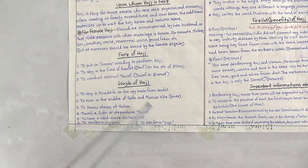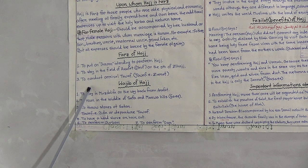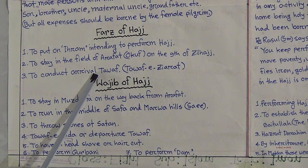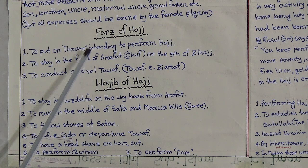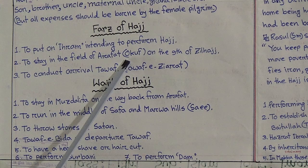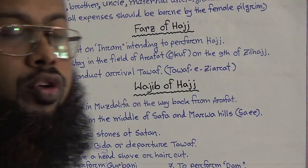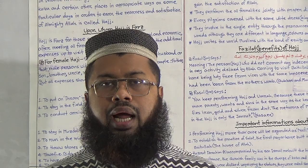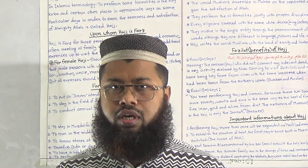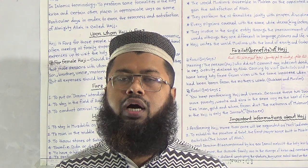Now I will discuss the fard (obligatory pillars) of Hajj. There are three fard, and this is very important — if you omit any one of them, the Hajj will be cancelled. Number one is to put on Ihram, intending to perform Hajj. Number two is Wuquf-e-Arafat — to stay in the field of Arafat on the ninth of Zilhajj. Number three is Tawaf-e-Ziyarat — to perform tawaf of the holy Kaaba.